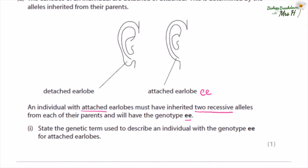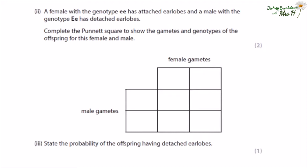When we refer to male and female in genetics, we are referring to females as those assigned female at birth and males as those assigned male at birth. A female with the genotype ee has attached earlobes, and a male with the genotype Ee has detached earlobes. Complete the Punnett square to show the gametes and genotypes of the offspring — e and e for the female parent, and E and e for the male parent. Both offspring here will be Ee, getting E from dad and e from mum. The other two will be ee, getting e from mum and e from dad.